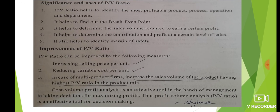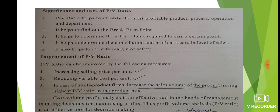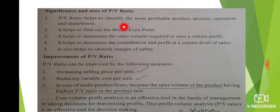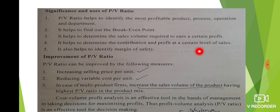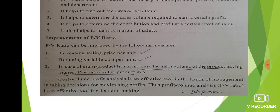PV ratio helps to identify the most profitable products. It is associated with sales volume, contribution, profit, and margin of safety. Let's look at how PV ratio is associated with selling price and variable cost.